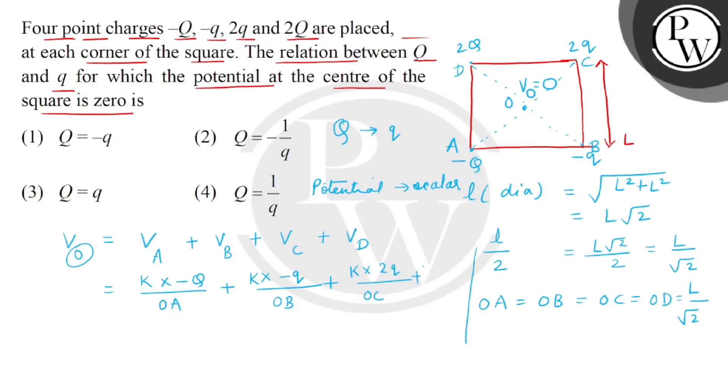Now, this potential given is zero. So, we can write zero equals to the sum, where OA, OB, OC and OD are all equal.